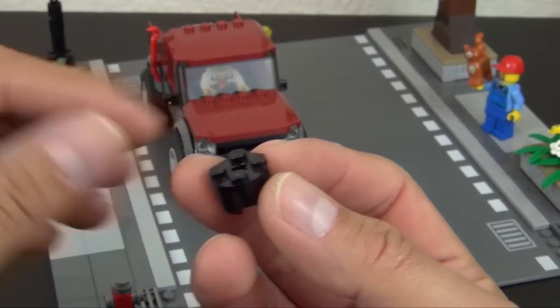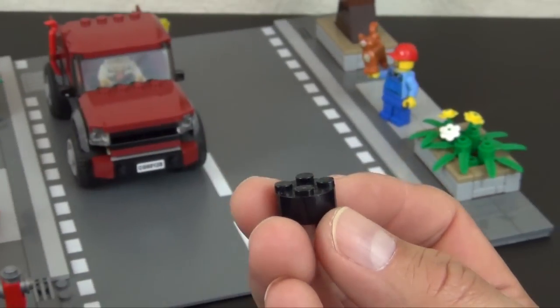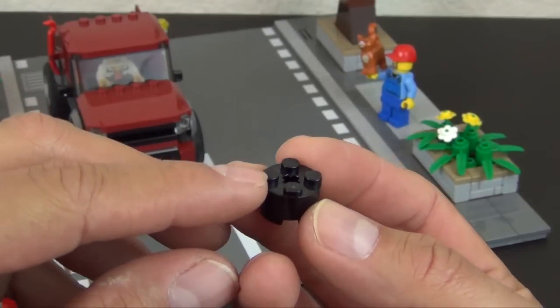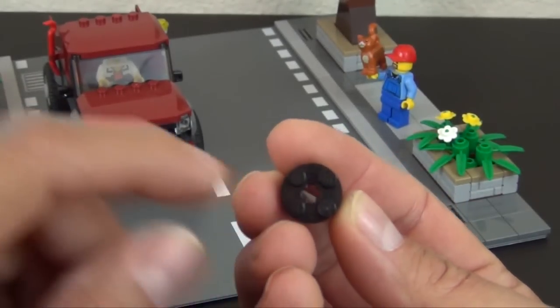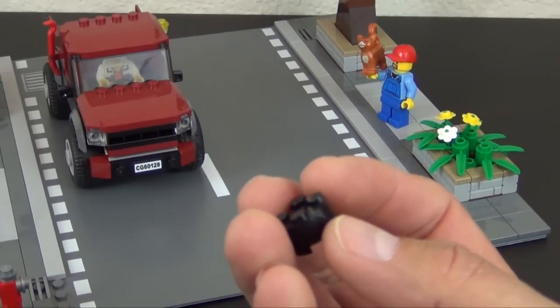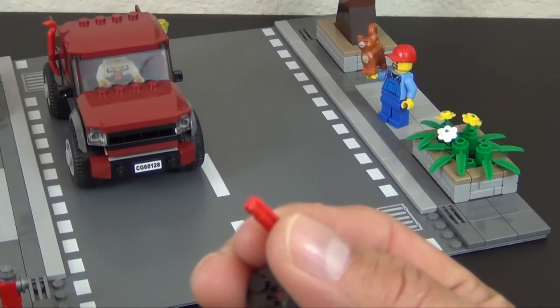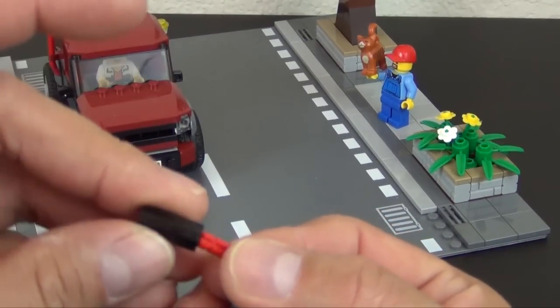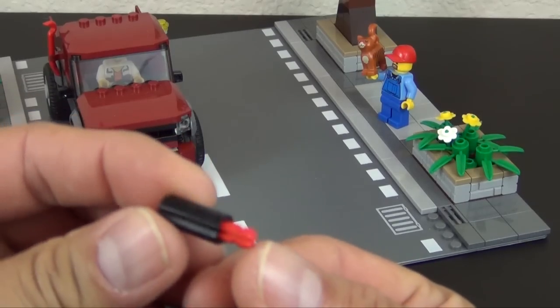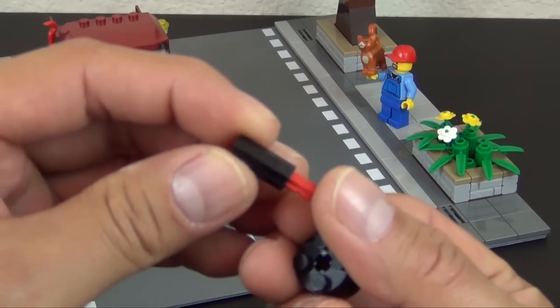Let's look at how we're going to build this. We start off with this 1x2x2 round brick. You see it has a Technic axle hole in the top.